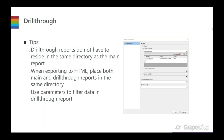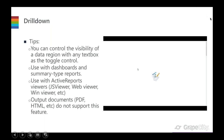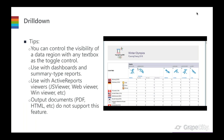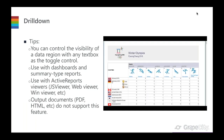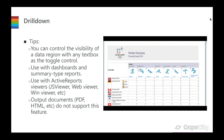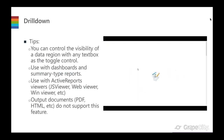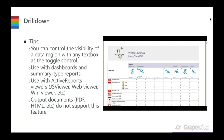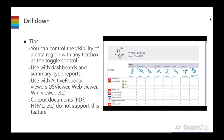For drill down: you can control the visibility of one control or region using a text box as a toggle. This is very useful when you have dashboards or summary type reports. One important note — drill down and drill through are best used with Active Reports viewers such as the JS viewer, HTML5 viewer, WinForms viewer, web viewer, or WPF viewer. When you output documents to PDF, HTML, or Word, the interactivity won't work — PDF, HTML, and Word don't support drill down.